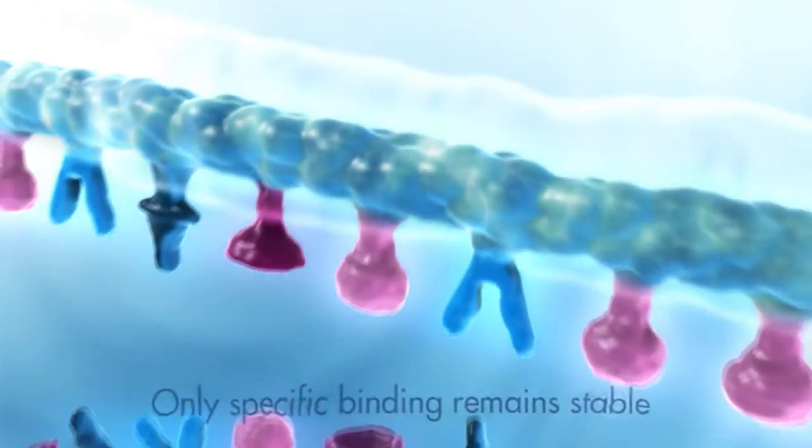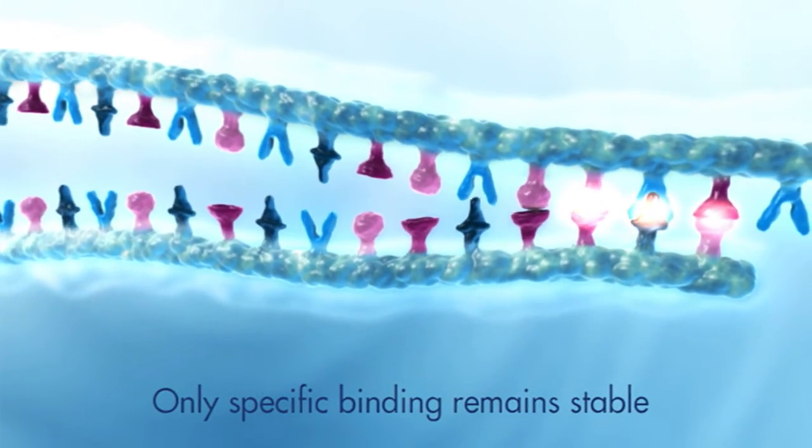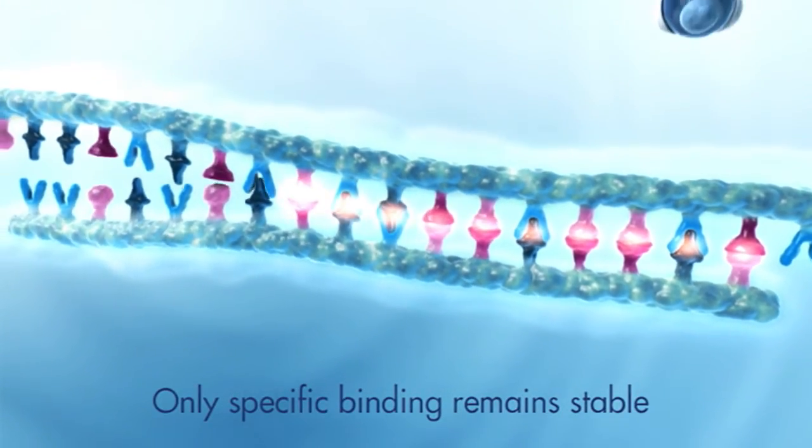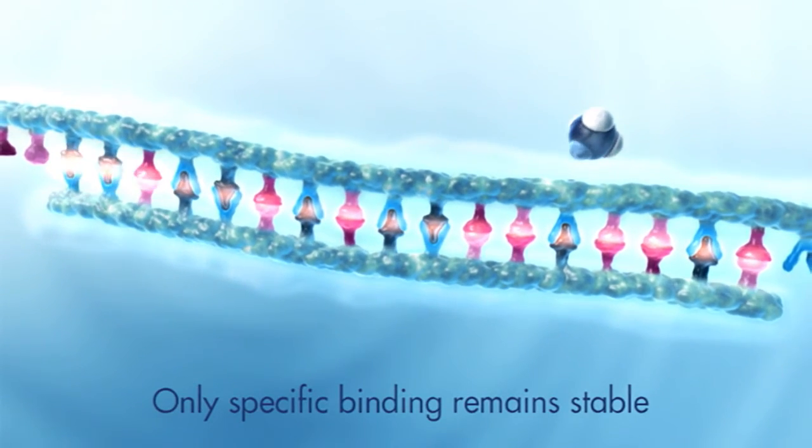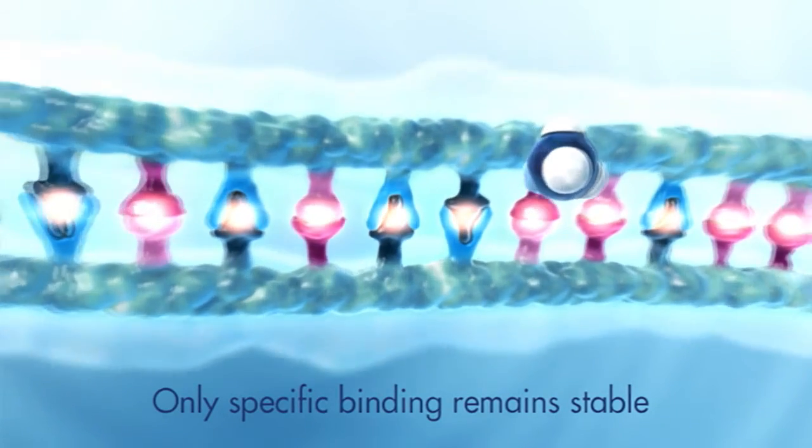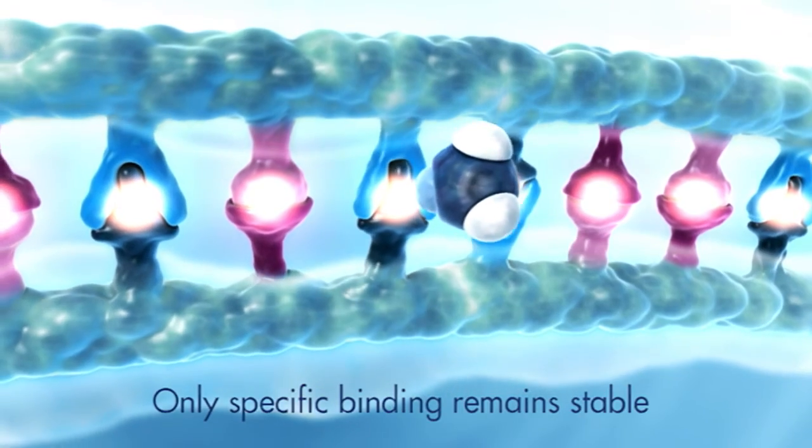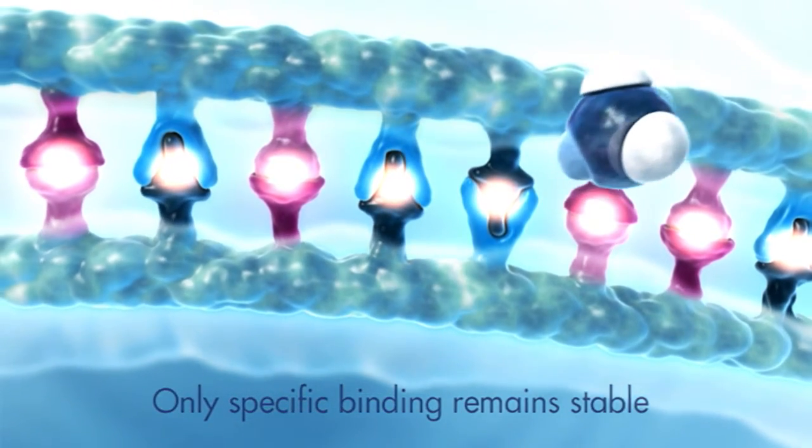Only specific binding and perfect base pair matches resist the destabilizing effects of the NH4+ ions. Those primers with a perfect base match stay annealed and are preferentially elongated later on in the PCR process.